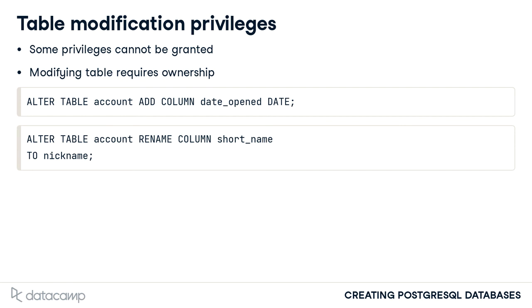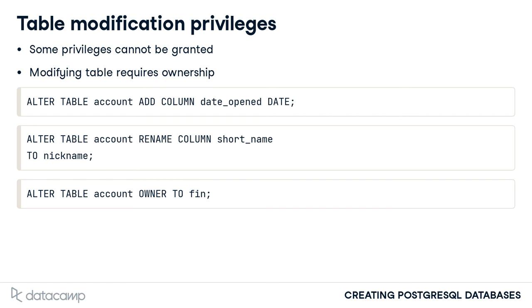However, if such table modifications were required, the super user could transfer table ownership to FIN using an ALTER TABLE command. After this command is executed, the FIN user would have permission to issue the previously restricted ALTER TABLE commands.